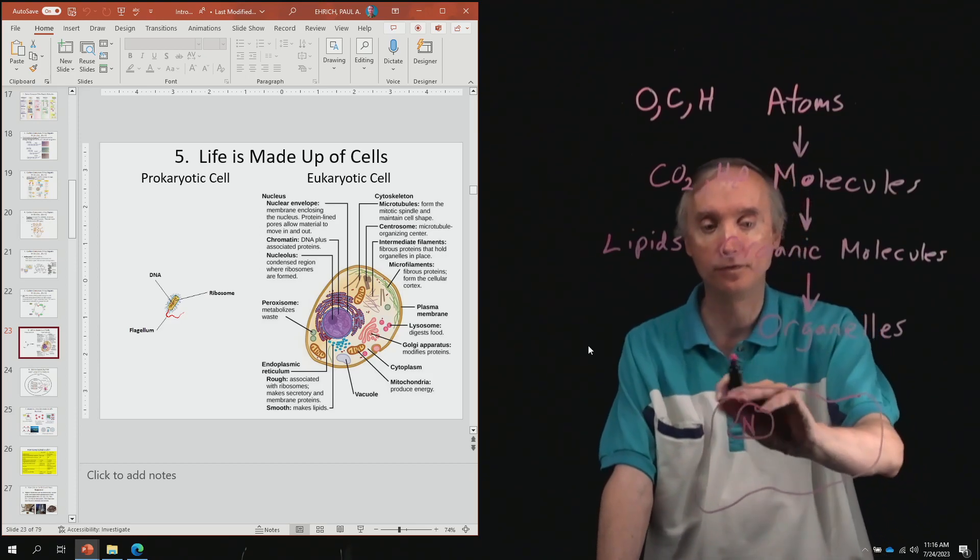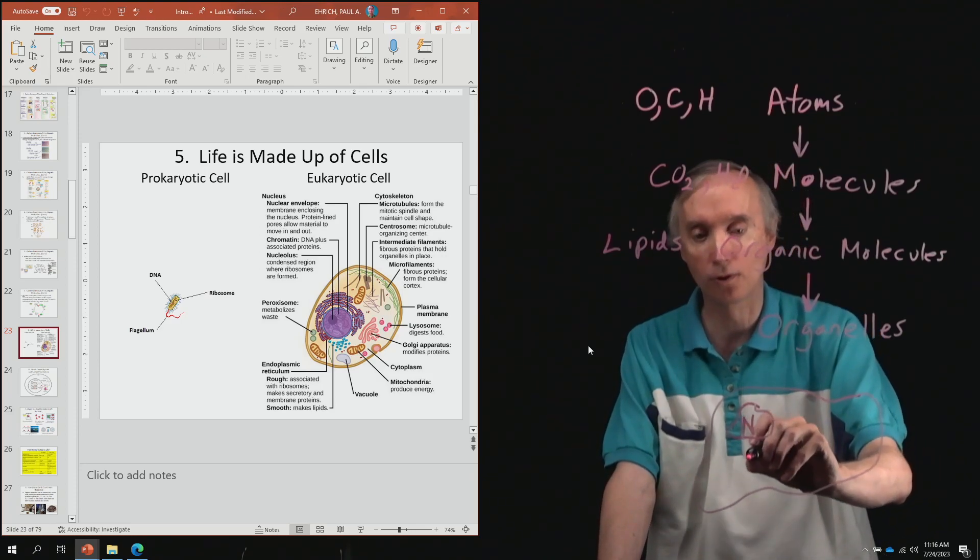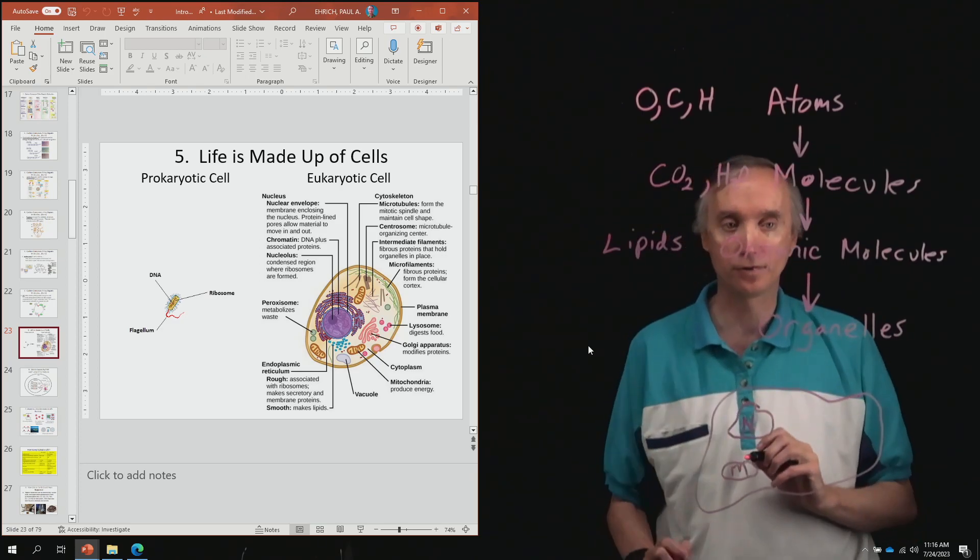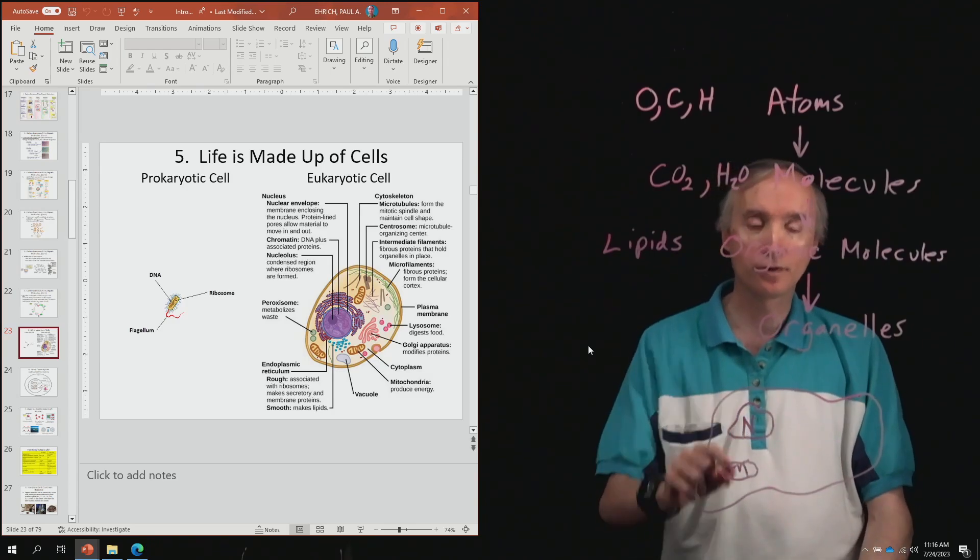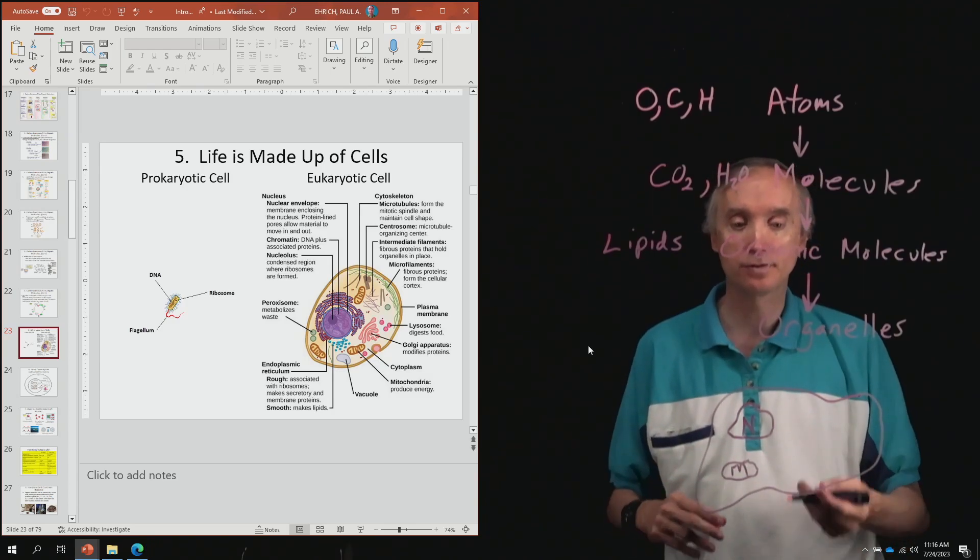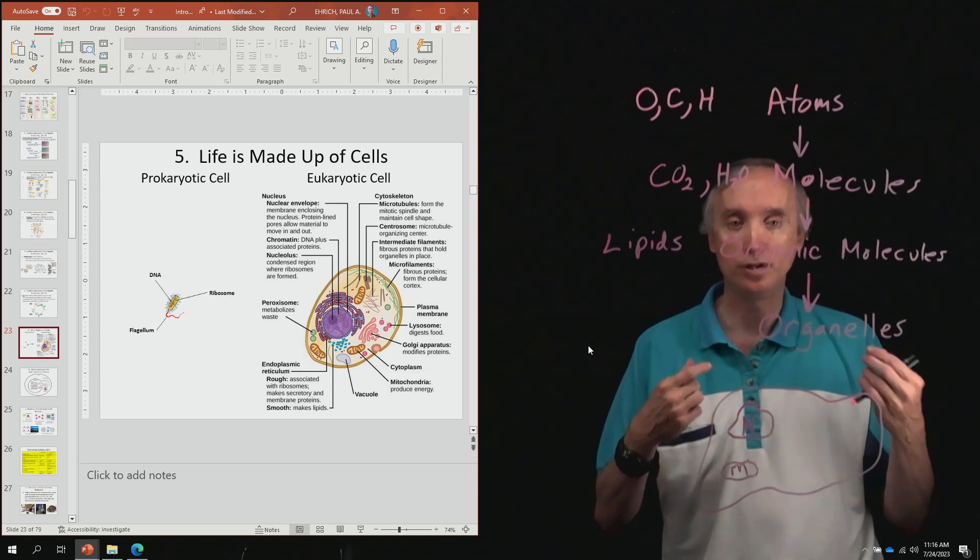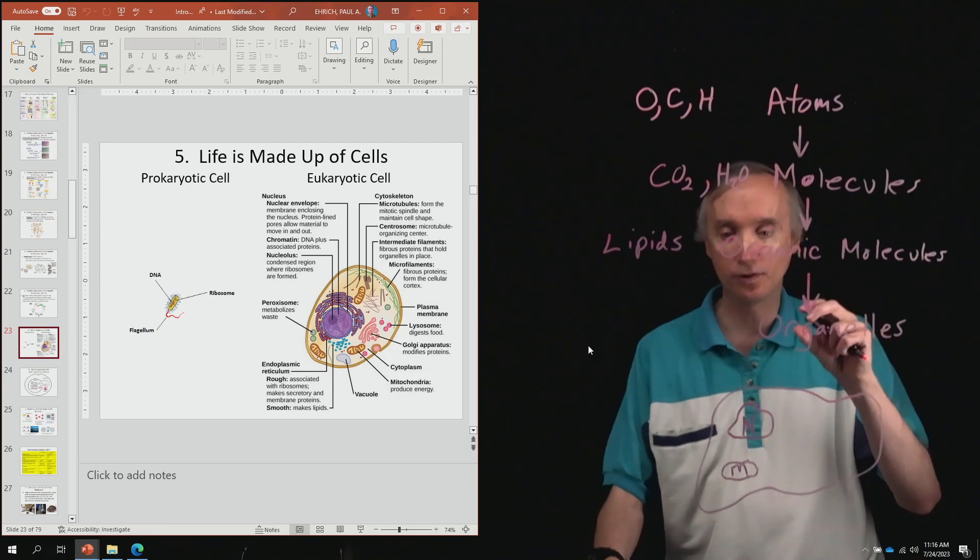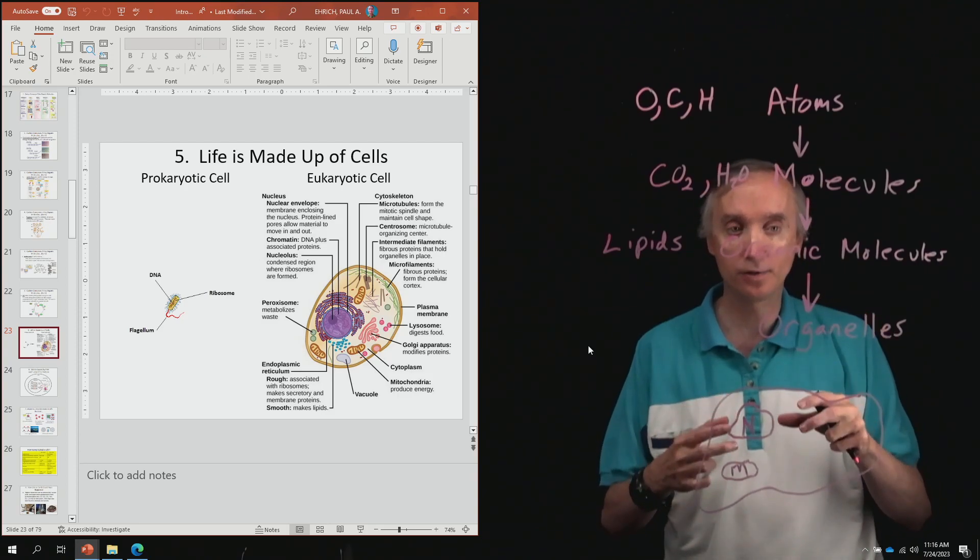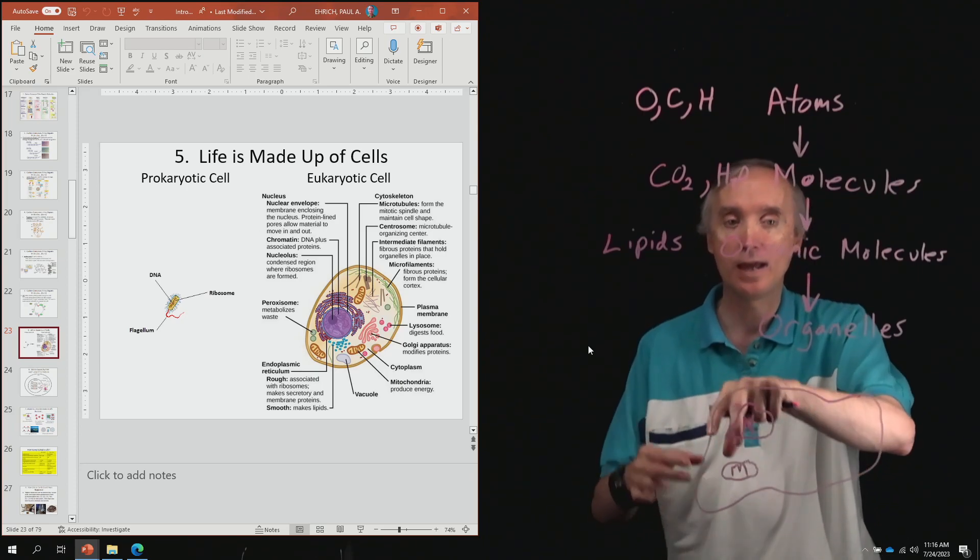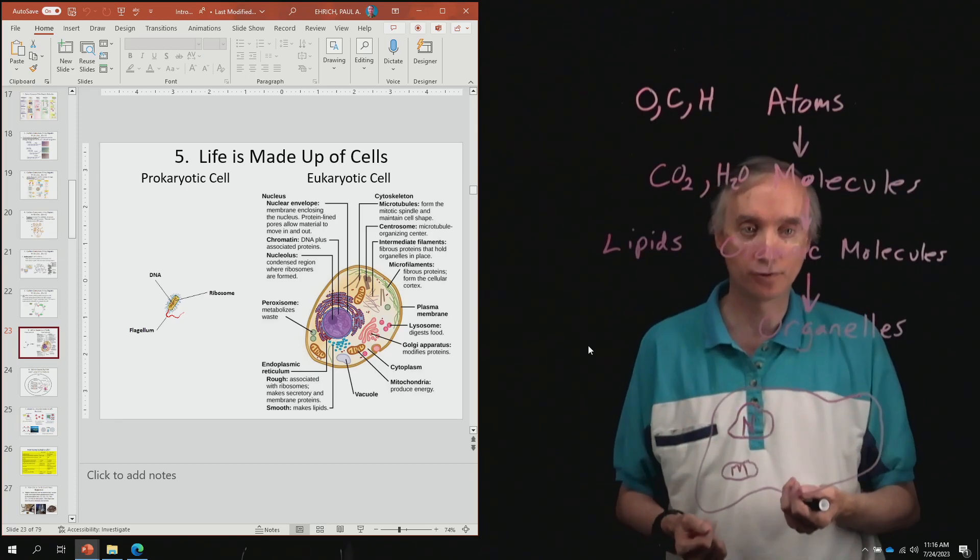Another part of the cell, another organelle that you need to know about is the mitochondria. So I'll say M for mitochondria. The mitochondria is the power plant for the cell. So when you eat something, those organic molecules are going to be broken down in the mitochondria and then are going to be used to make energy.